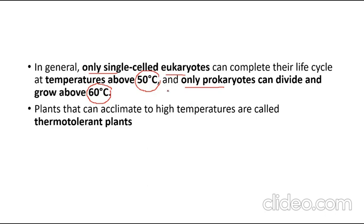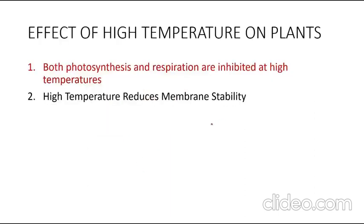Plants which can acclimate to high temperature are known as thermotolerant plants. Acclimation means resistance, so thermotolerant plants show resistance to high temperature. The main metabolic processes of plants — photosynthesis and respiration — are the first to be inhibited at high temperature.